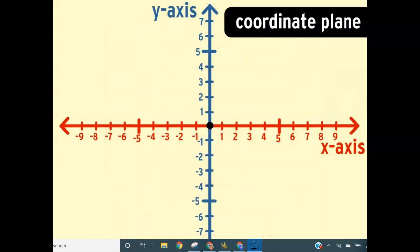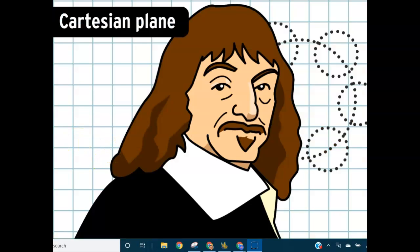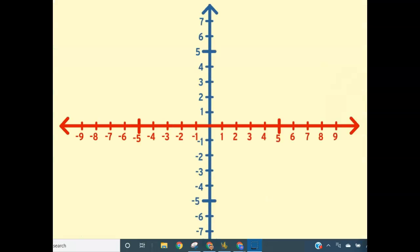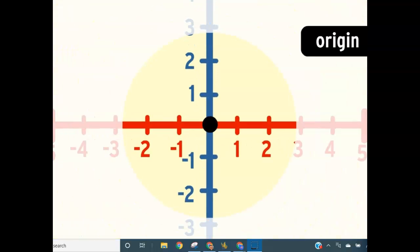A coordinate plane is a plane overlaid with two perpendicular number lines. Those lines help you find any point on the plane. It's also known as a Cartesian plane after René Descartes, the guy who developed the idea way back in 1637. Basically he drew two perpendicular lines in the middle of a plane and called the place where the lines intersect the origin.